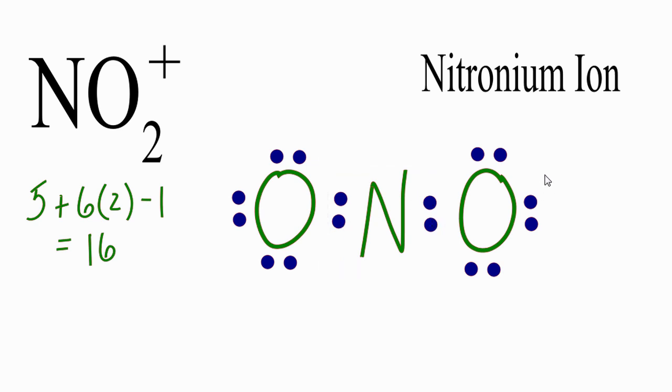So what we're going to do is take electrons from the outside and move them to form a double bond. So now, this oxygen has 2, 4, 6, 8, but the nitrogen has 2, 4, 6, we're almost there. Let's take another pair, how about this pair, and move it to the center.